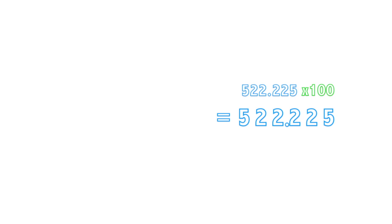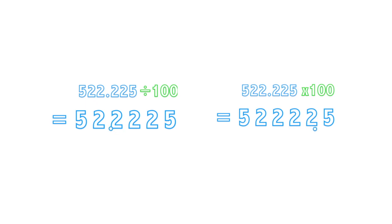So, to recap. When you multiply a decimal number by orders of 10, you shift the decimal point to the right. If you divide a decimal number by orders of 10, then you shift the decimal point to the left.